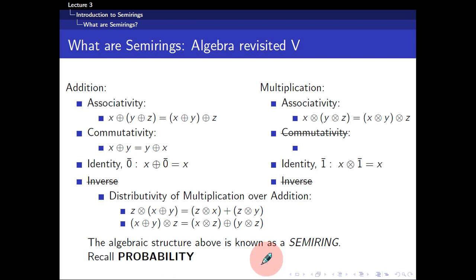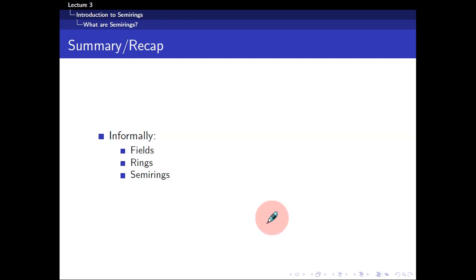So, all of these things we have seen before, but it's just that we haven't really formalized it and formally call it a semi-ring. So, this is basically abstract algebra, a short introduction at least. So, a short recap is that we have been introduced informally to fields, rings, and semi-rings.